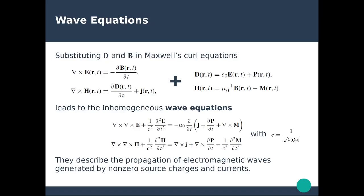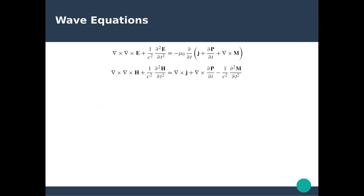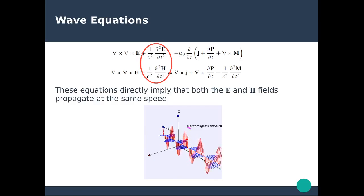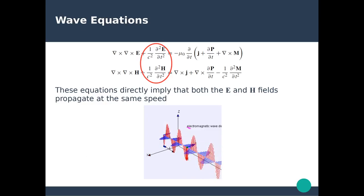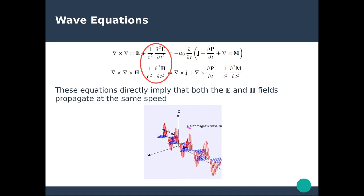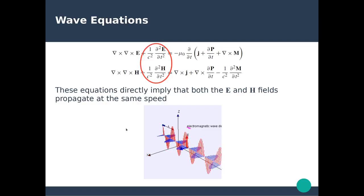Once we have the wave equations, we can look into them further. The first thing to notice is the central term containing one over c-squared, where c is the speed of light. This tells us that electric and magnetic fields propagate at the same speed — the speed of light. In this wave description of light, you have both an electric field component (shown in red) and a magnetic field component (shown in blue), propagating in space and time at constant velocity c.